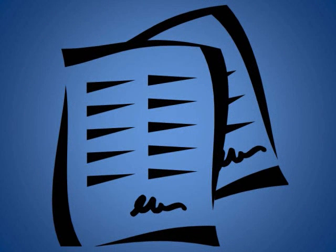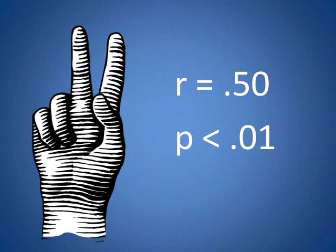I can tell that some of you didn't download and look at all of the handouts — some of the answers are spelled out in them. Some questions, like number eight, include two things to address. In this case, you needed to address R equals .50 and P is less than .01. Each of these tells you something different about the results. If you didn't address both parts, you couldn't earn full credit.